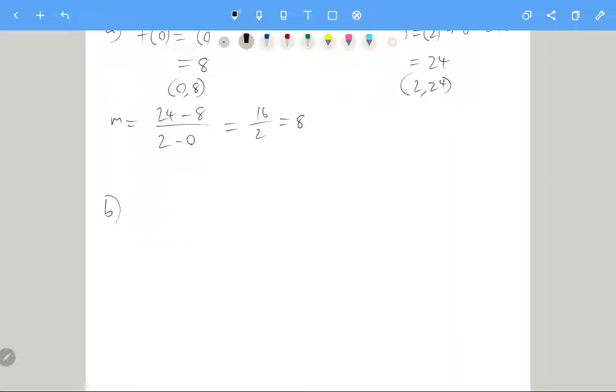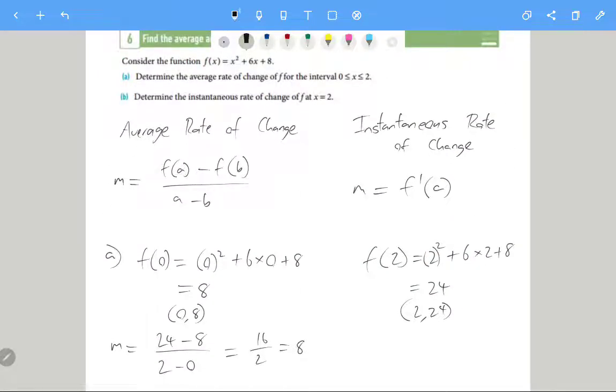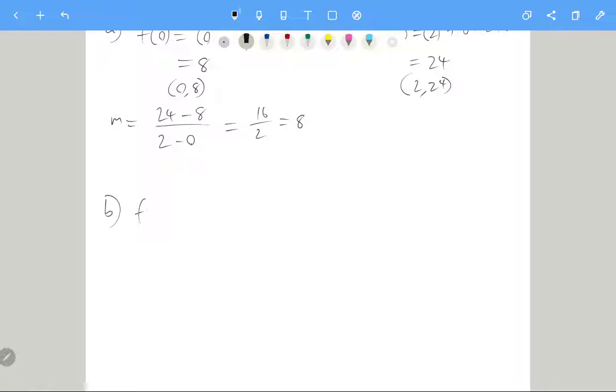B is looking for the instantaneous rate of change. So we're gonna work that out by first working out the derivative of f of x, which is two x plus six.